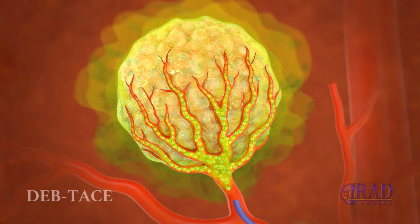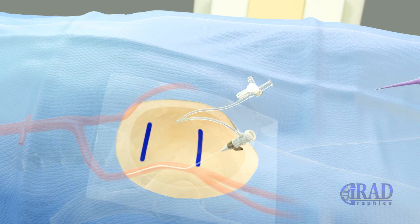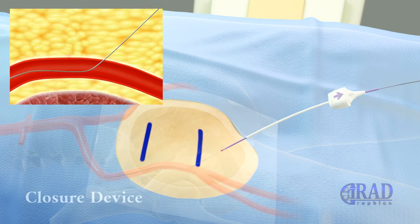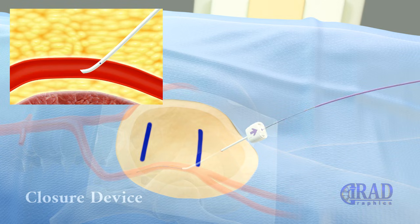Upon completion of the embolization, the microcatheter and catheter are removed. Hemostasis is achieved either by applying manual pressure or a closure device. For an active closure device, first a short wire is advanced through the sheath into the common femoral artery. The vascular sheath is then removed, and a special sheath and dilator from the closure kit are advanced over the wire into the common femoral artery. After adjusting the position of the sheath tip based on bleeding feedback, the dilator and wire are removed.